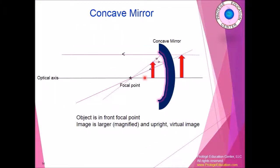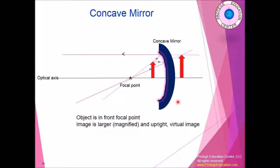When an object is placed closer to the mirror than the focal point, the rays reflect differently and the image appears to form behind the mirror — this is called a virtual image, which cannot be projected. In this case, the image is also larger in size and right-side up. This is why concave mirrors are used for makeup — you can get close to the mirror and see your face in a larger, magnified form.